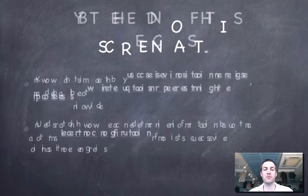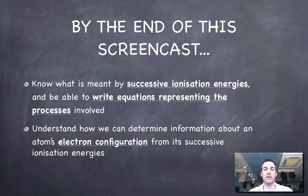By the end of this film you'll know what we mean by successive ionization energies, and you'll be able to write equations to show the processes that are involved here. And also you'll be able to understand how we can determine information about an atom's electron configuration by looking at its successive ionization energies.